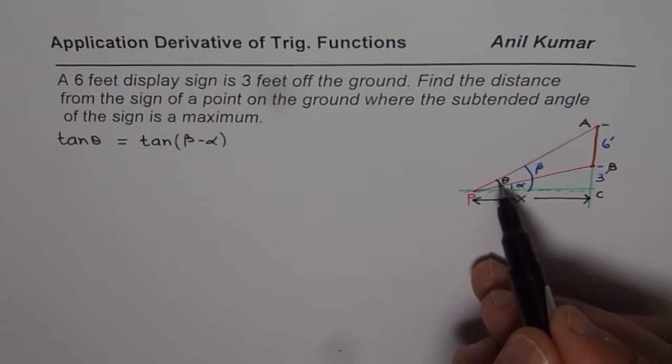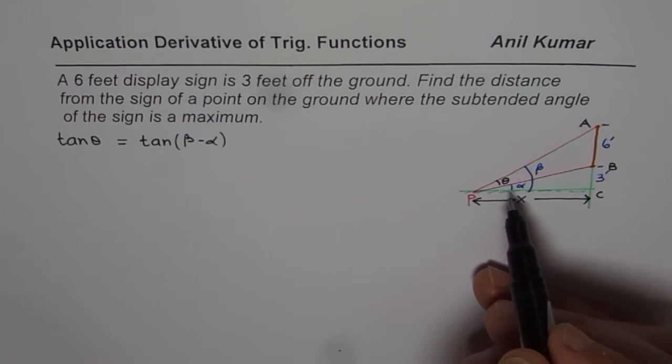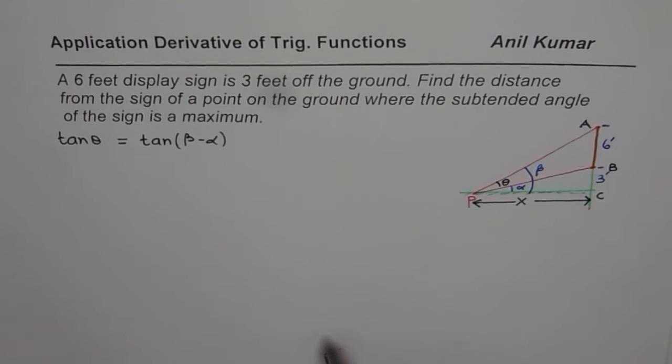Which is equal to tan of beta minus alpha, right? I hope that point is very clear. So this angle theta could be beta minus alpha, that is clear. So tan of theta is same as tan of beta minus alpha.